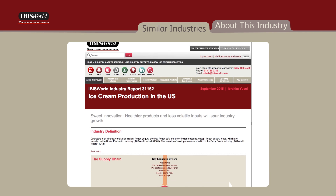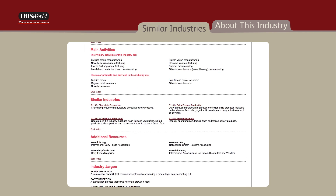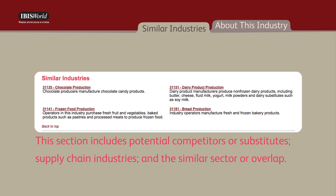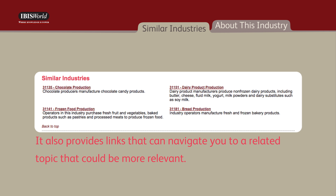The Similar Industries section includes potential competitors or substitutes, supply chain industries, and the Similar Sector or Overlap. It also provides links that can navigate you to a related topic that could be more relevant.